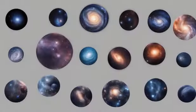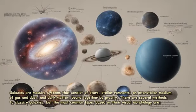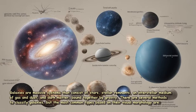Types of Galaxies: Galaxies are massive systems that consist of stars, stellar remnants, an interstellar medium of gas and dust, and dark matter, bound together by gravity. There are several methods to classify galaxies, but the most common types based on their visual morphology are: